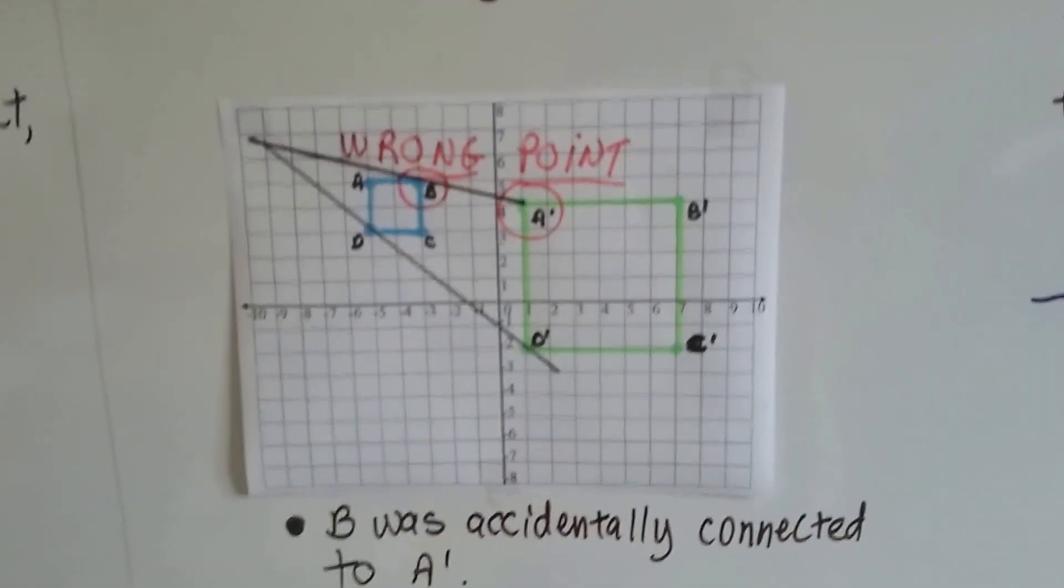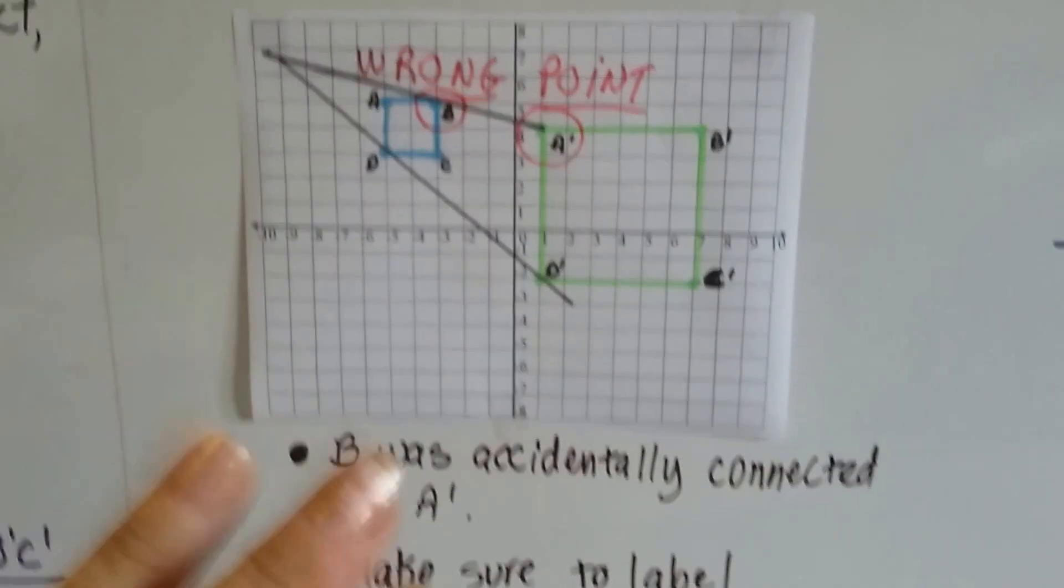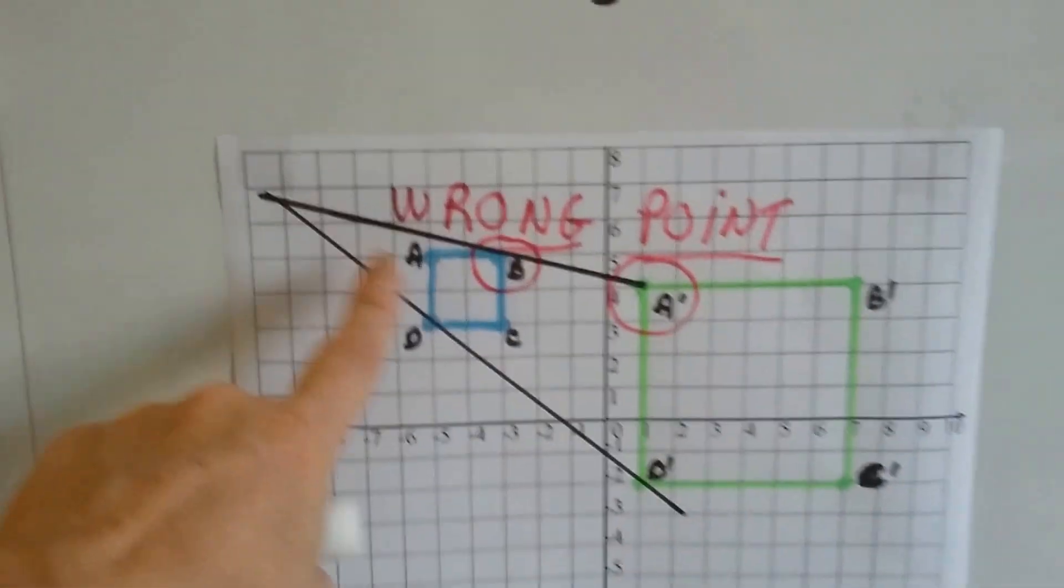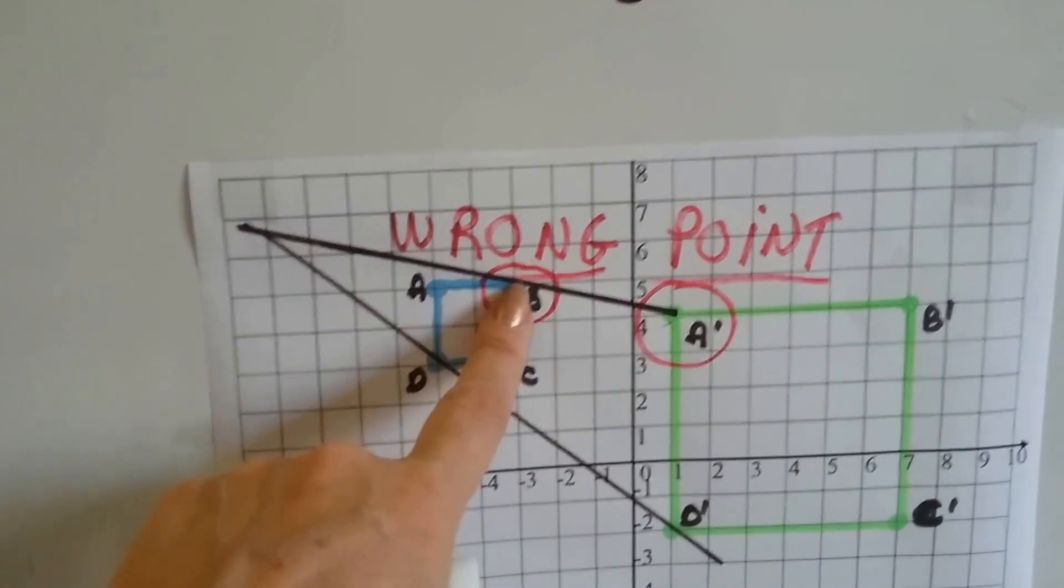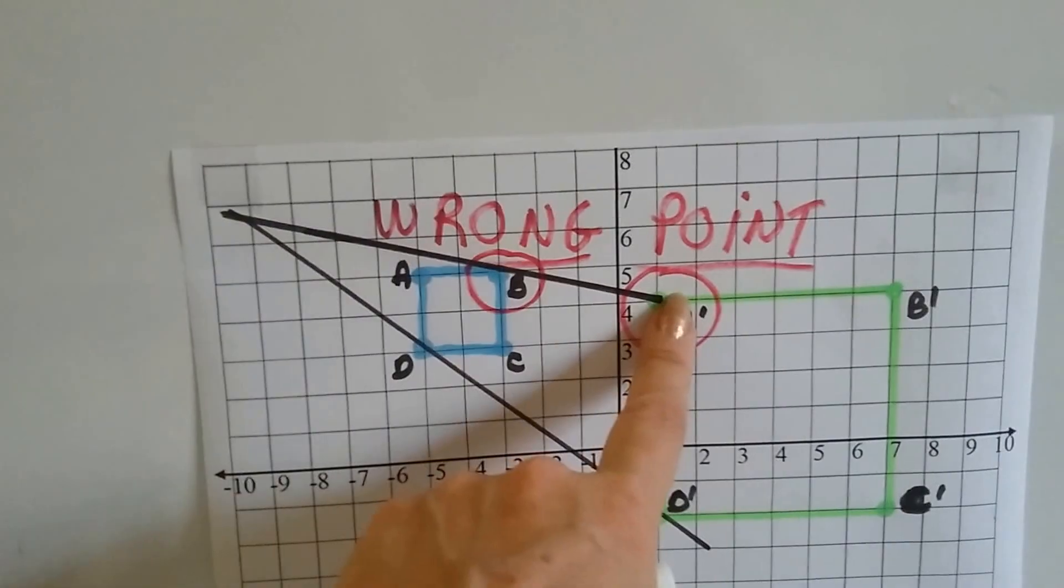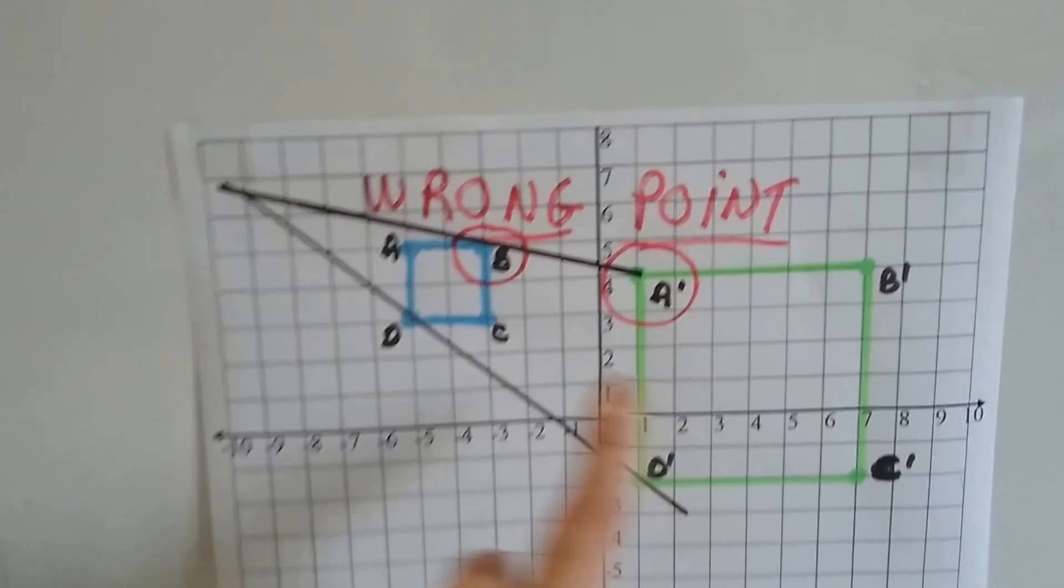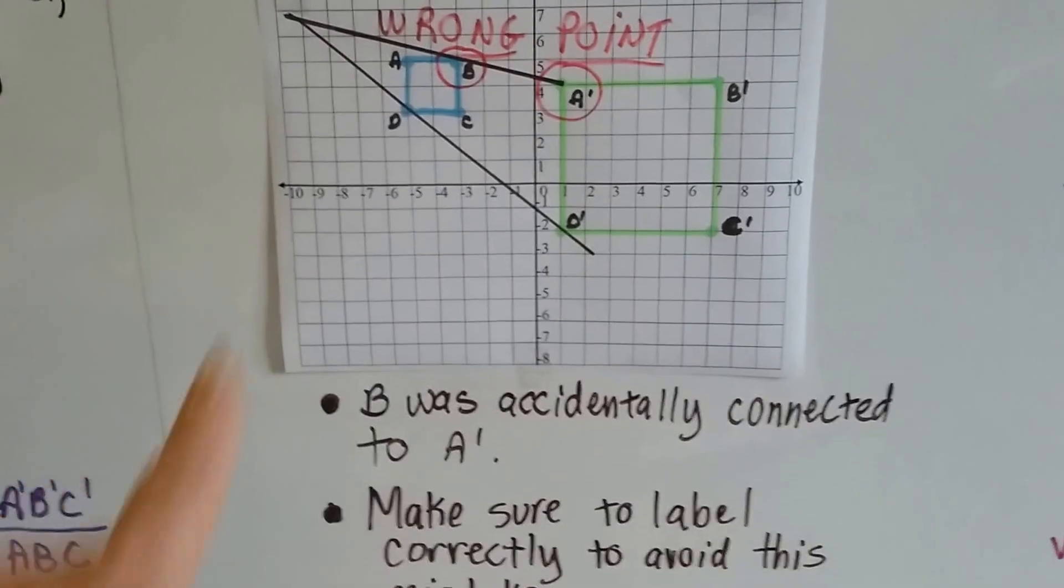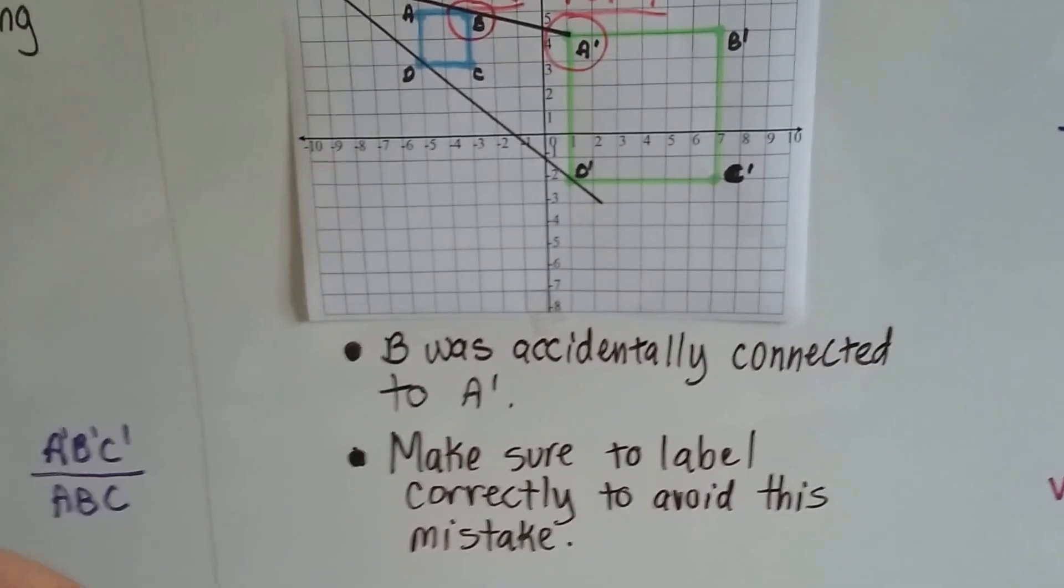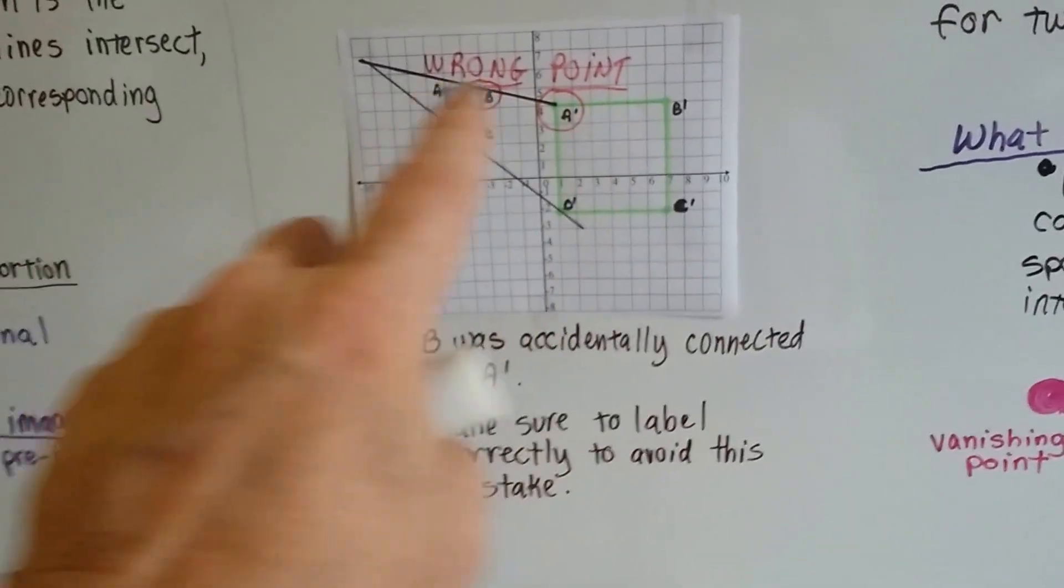You want to make sure that you don't draw the wrong line because that'll mess everything up. In this one, b was accidentally connected to a prime. Here's the vanishing point, here's point b, and it was drawn to a prime. That's not the right one. It should have been a to a prime and b to b prime. Make sure to label correctly to avoid this mistake and connect the corresponding points.